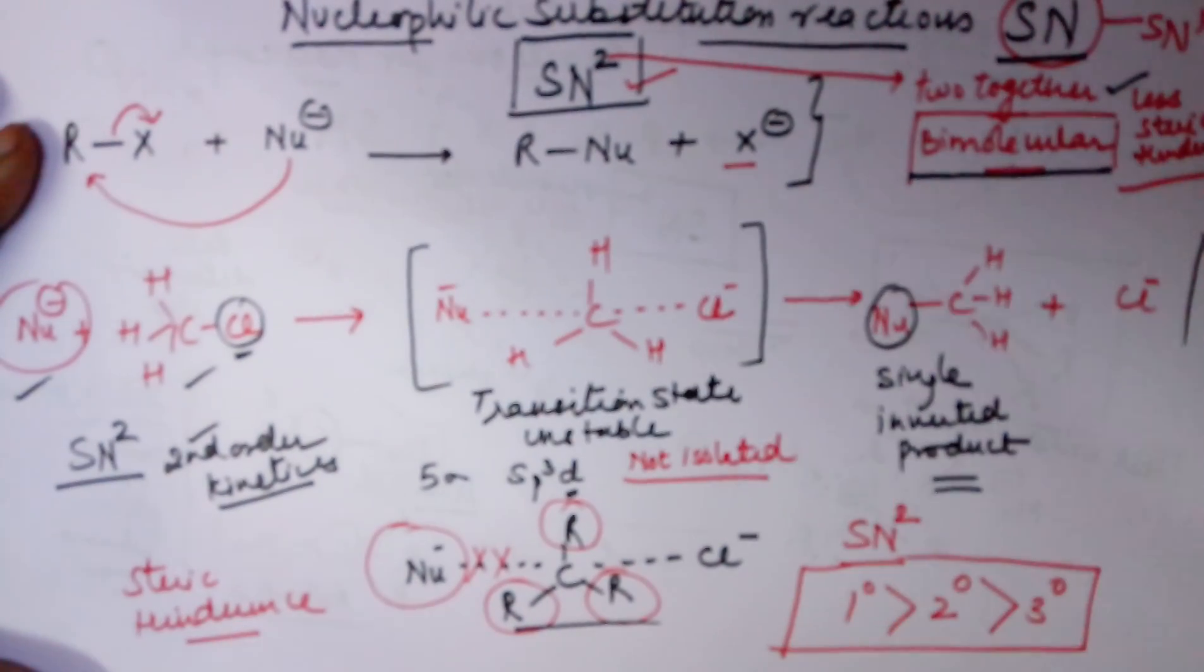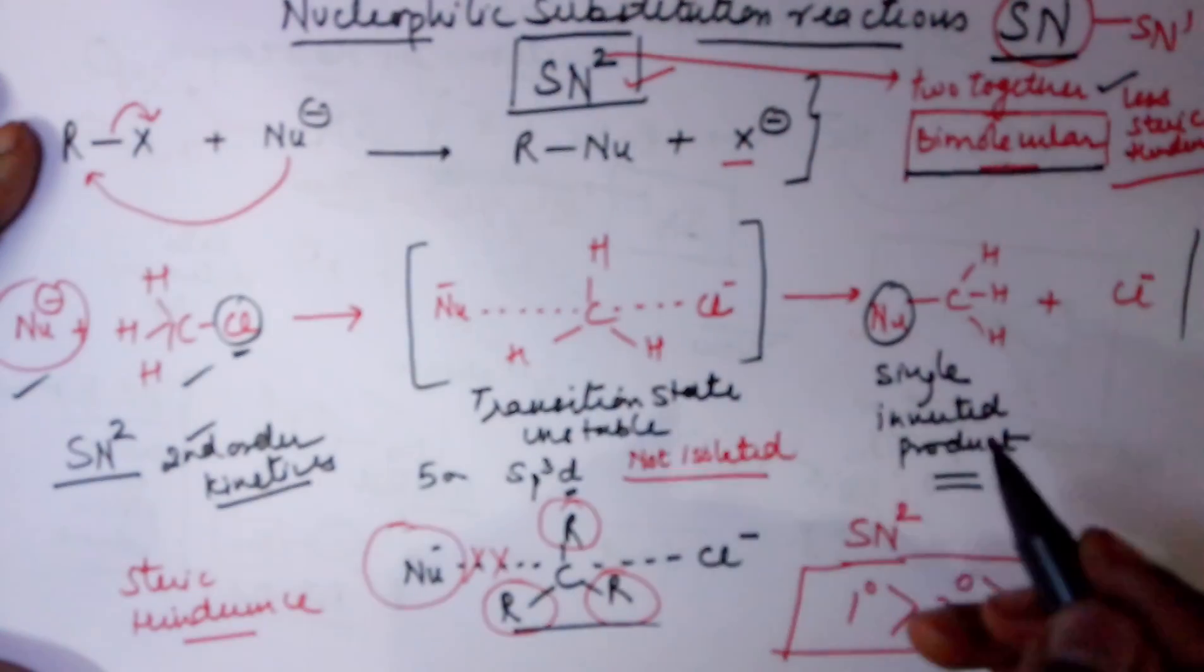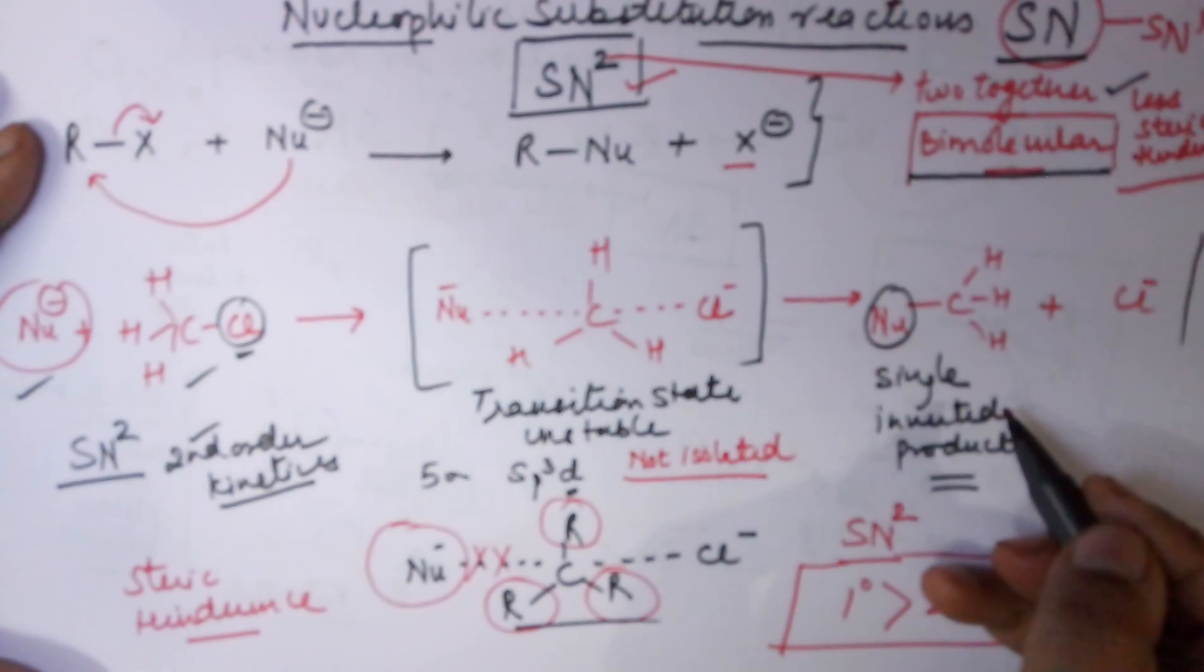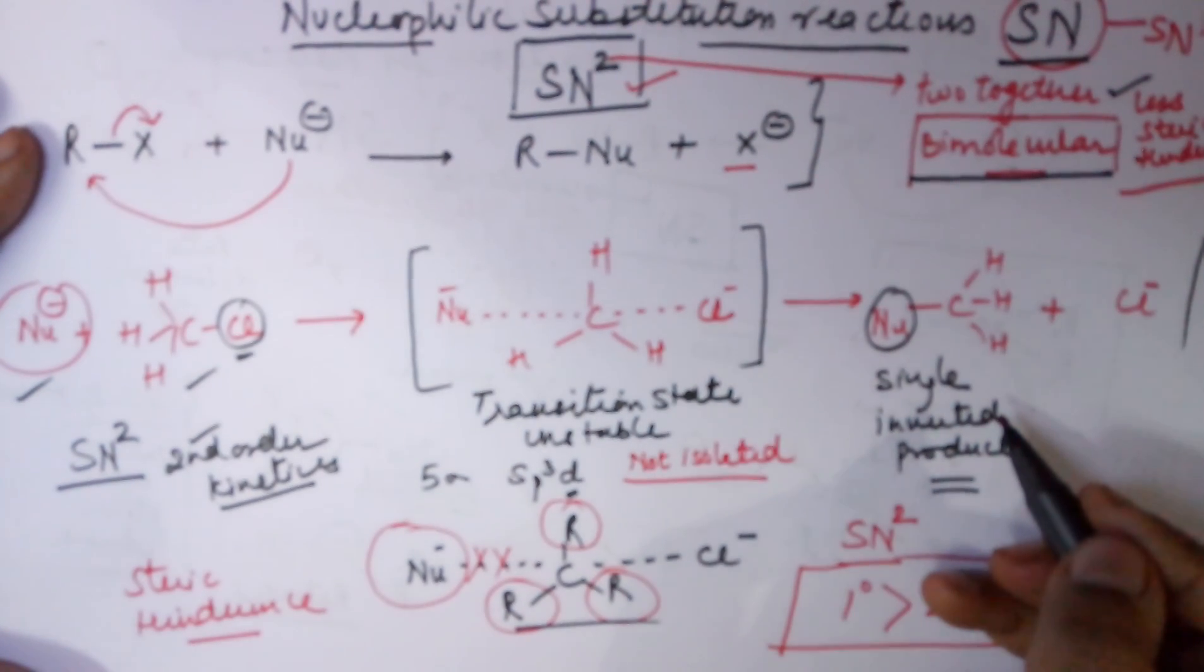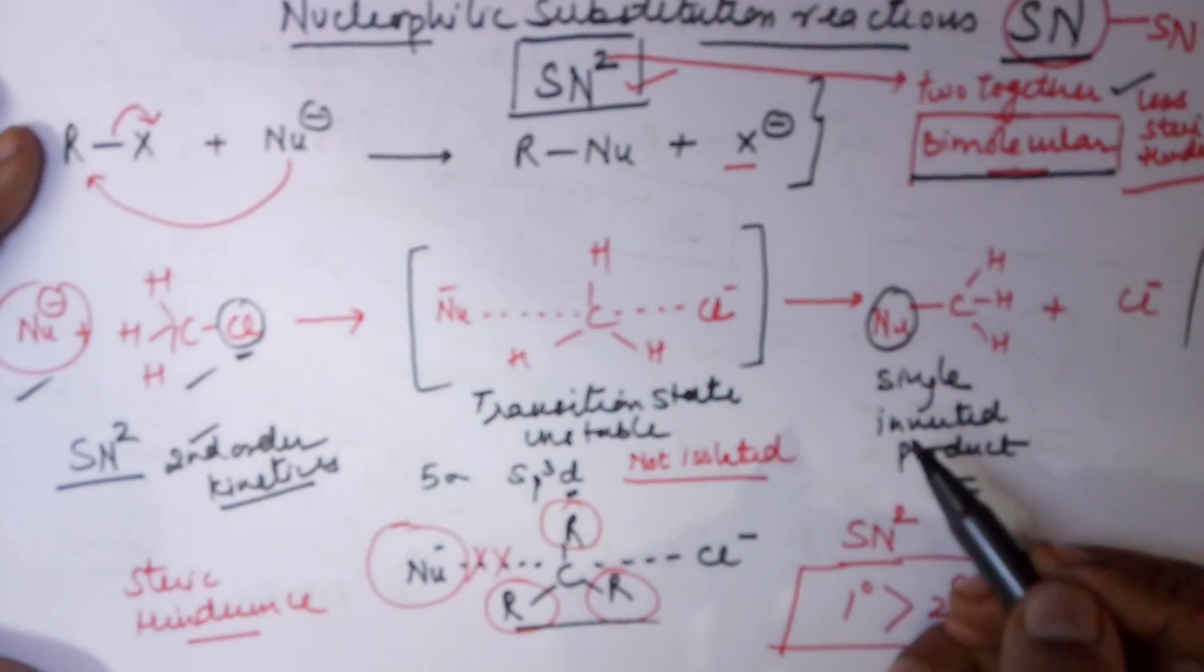So, those molecules where the carbon from which the halogen is leaving is less sterically hindered, means has smaller groups, lesser bulkier groups, the mechanism followed as SN2.